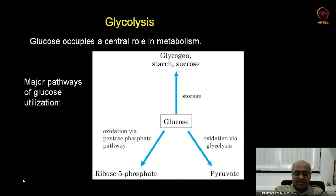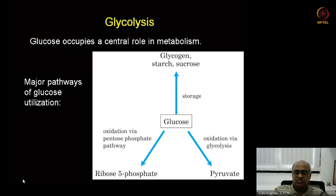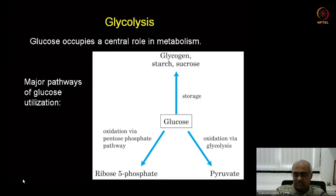Having equipped ourselves with all this fundamental knowledge — including types of biochemical reactions such as oxidation-reduction, carbon-carbon bond formation and breakage, the importance of carbonyl carbons, and isomerization — we will now get into an actual biochemical pathway: glycolysis. If you want to learn one biochemical pathway in your life, this is the one.